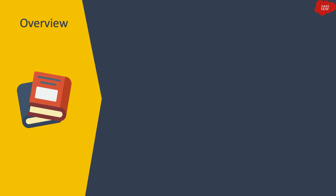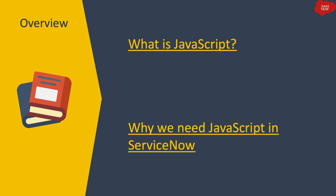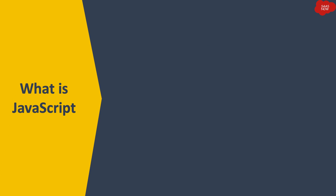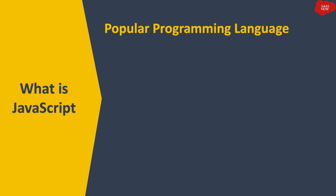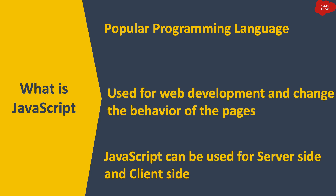In some cases the examples will be related to ServiceNow functionalities as well. The first section of this course is overview of JavaScript. In this section we will learn what is JavaScript, why we need JavaScript in ServiceNow, and some more details. JavaScript is a popular programming language used for web development and to change the behavior of pages. It is an interpreted programming language with object-oriented capabilities, mostly used for client-side development, however you can also perform server-side development.